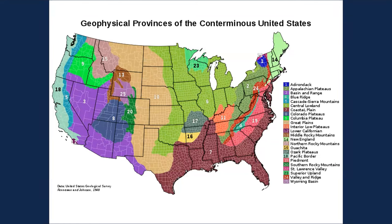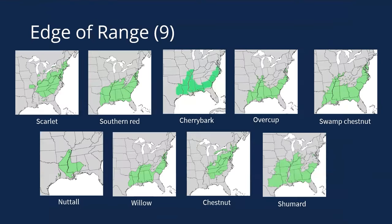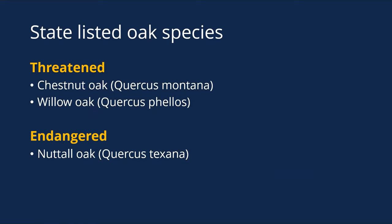We're at the edge of many species' ranges — nine of our native Illinois oaks are just barely within their range, like Nuttall and willow oak which barely enter southern Illinois. Much of our diversity comes from being at the confluence of multiple range edges. In fact, we have three species listed under state protection: chestnut oak and willow oak are listed as threatened, and one species is listed as endangered.